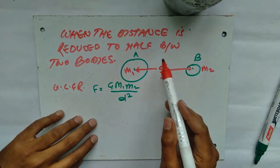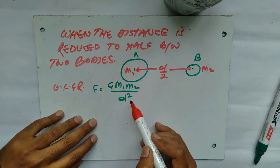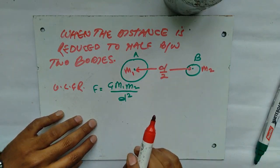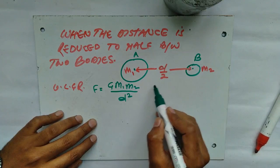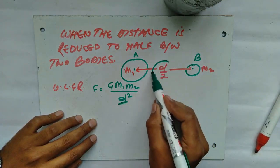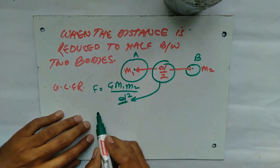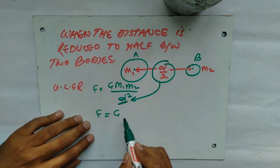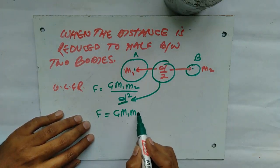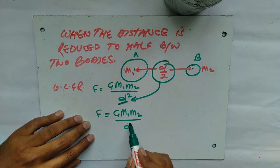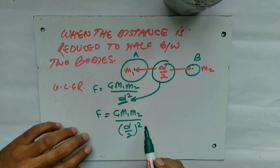Just because we have reduced to half now, this is d by 2 now, okay. Now by replacing this d with this d by 2, we would get F equals to G m1 m2 upon d by 2 whole square.